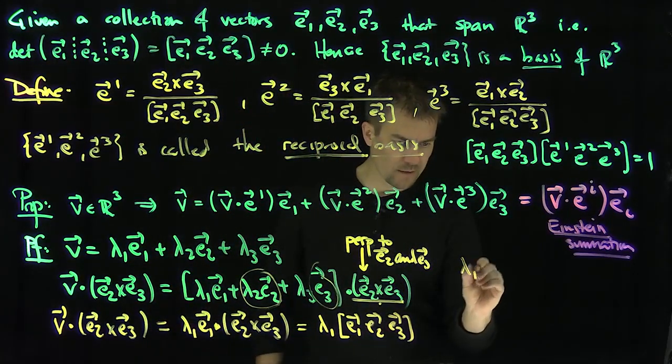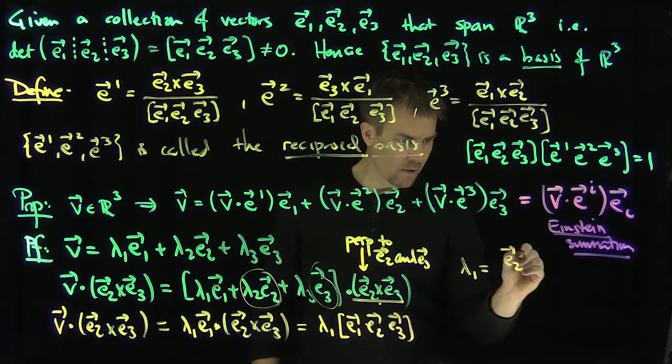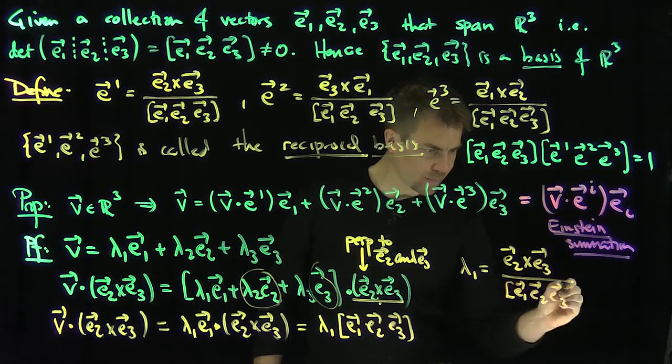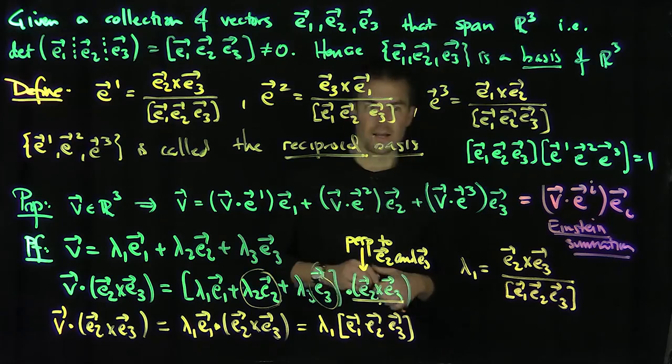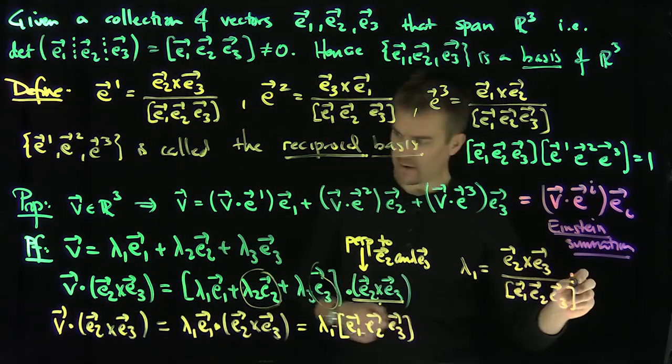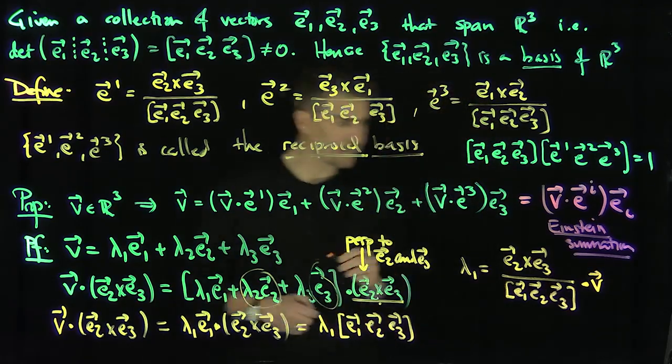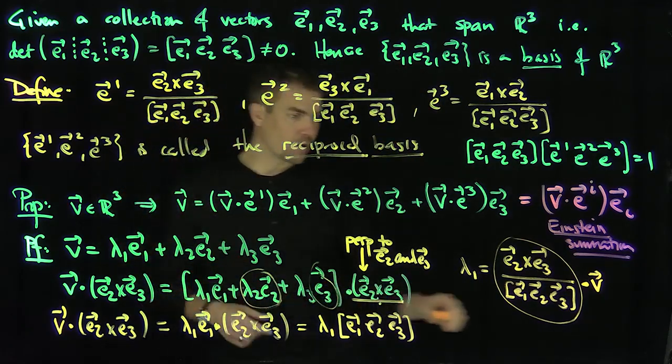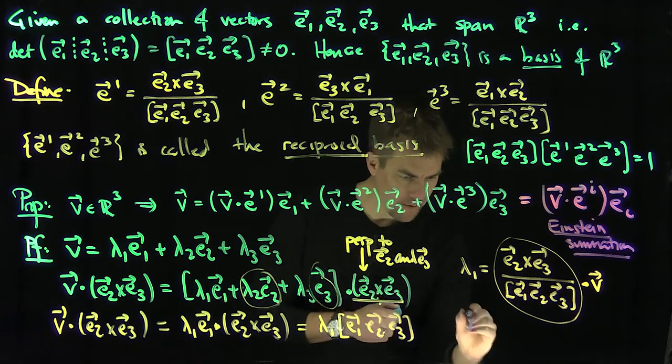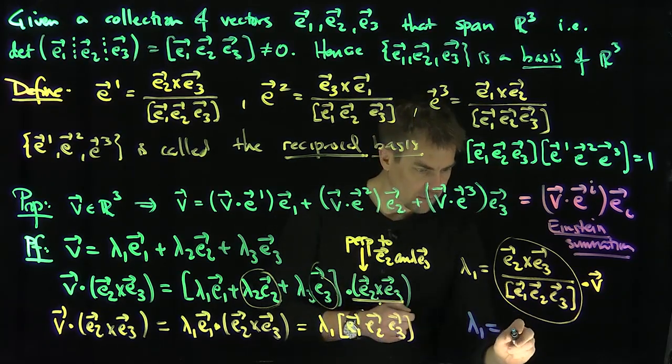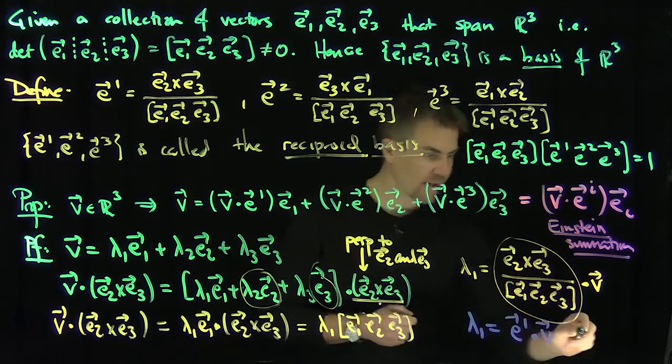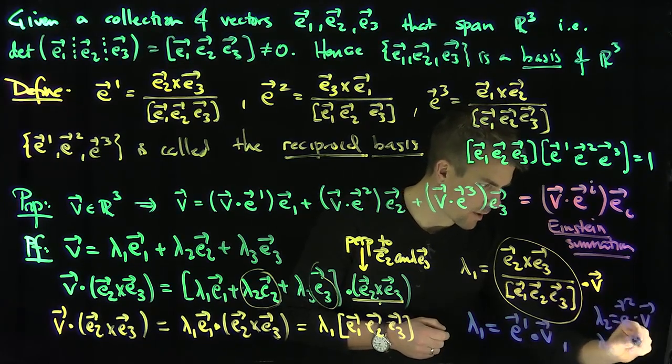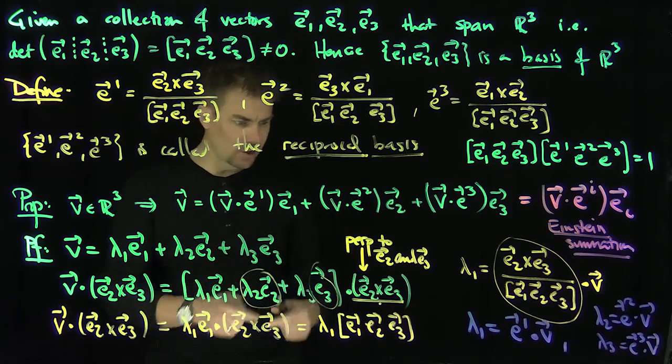And therefore, we just found what lambda 1 is. We found that lambda 1 is exactly V dot E2 cross E3 over the determinant of E1, E2, E3. And what is this expression over here? This expression over here is, of course, dot with V. And the dot product is symmetric, you can put it over here. And so what is this E2 cross E3 over the determinant? That's exactly E1 upper. So we've just shown that lambda 1 is equal to E1 upper dot V. And then similarly, lambda 2 is going to be E2 upper dot V, and lambda 3 is going to be E3 upper dot V. Just by the exact same argument except with lambda 1 changed with lambda 2 and lambda 3.